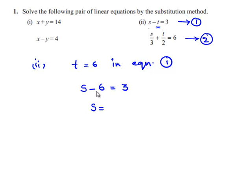Transposing minus 6 to the right hand side, we get 3 plus 6. s equals 3 plus 6, which is 9. Therefore, we found the solutions for the given pair of linear equations, which are s equals 9 and t equals 6.